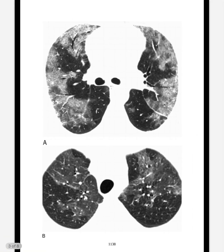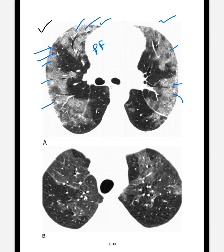Now we will see an example of ground glass opacity. In this first image we can see there is a haziness or increase in opacity in the lung without obscuring the vessels. In this case there is bilateral haziness in both lungs. This is an example of pulmonary edema, where the vessels remain visible in the dense lung region. The patient had acute dyspnea due to pulmonary edema.